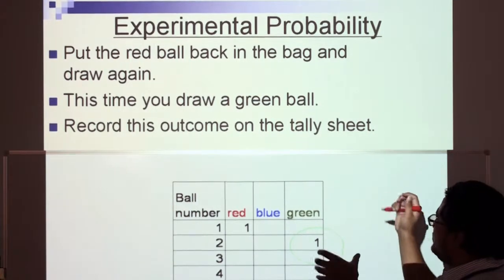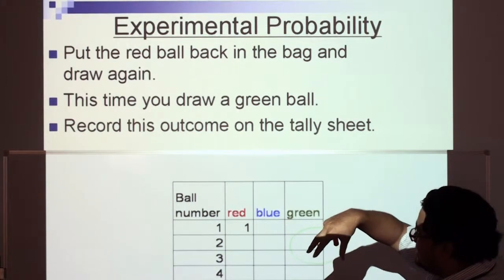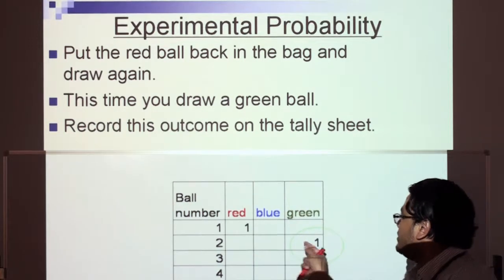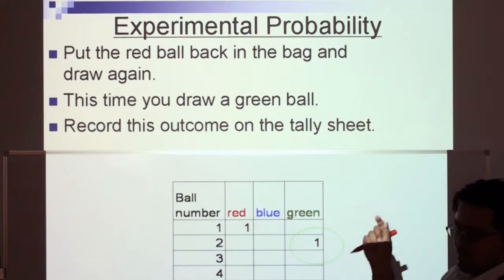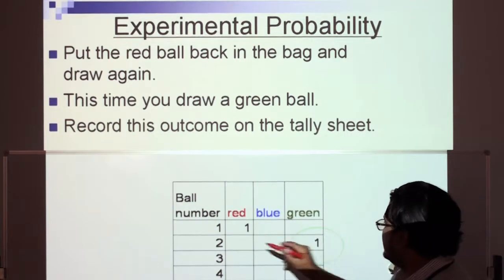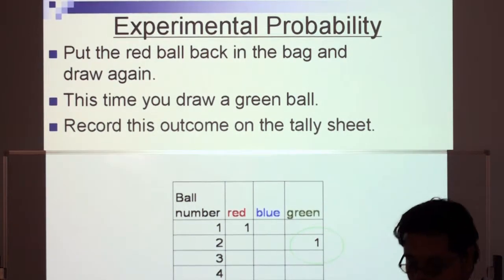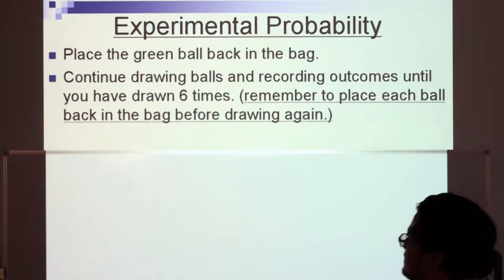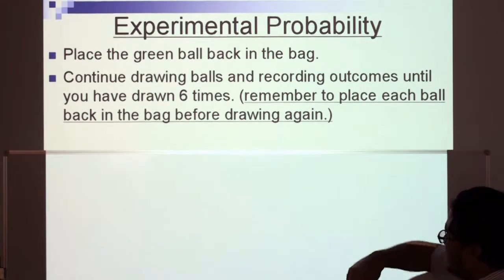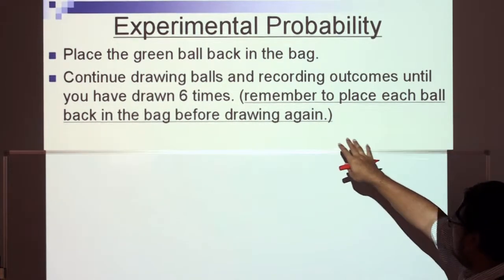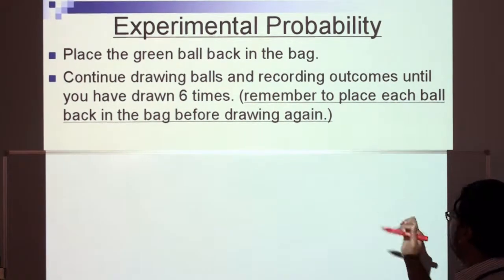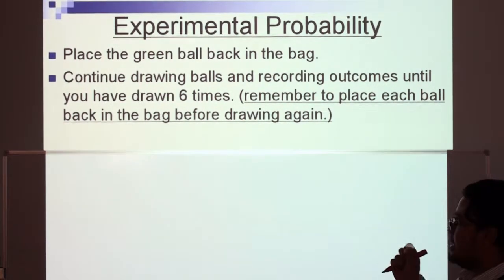We put the red ball back in the bag, then draw another ball. Our second ball is a green ball. We record this outcome on the tally sheet. We place the green ball back in the bag and keep drawing balls and recording outcomes until we've done this six times. Remember to place each ball back in the bag before you draw again.